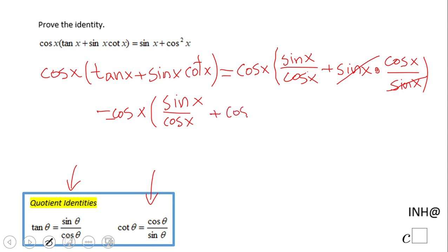The next step will be to multiply using the distributive property. What we get here is cosine of x times sine of x over cosine x, plus cosine of x times cosine of x following the distributive property.